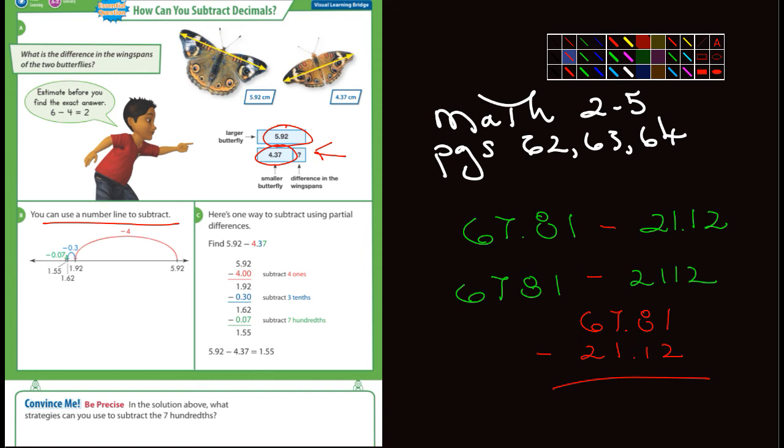We want to find the difference when we subtract. So the first thing they did here in example B is they subtracted the four, which is in the ones place, then they subtracted the 0.3, which is in the tenths place, and then finally the 0.07, which is in the hundredths place.